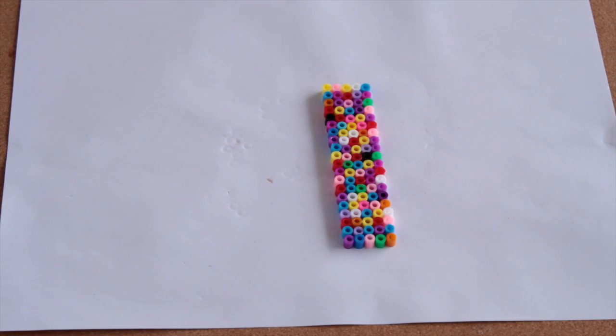You will need an ironing board or some sort of heat resistant board. To make the cuff bracelet, place a piece of paper or baking paper. Arrange the beads on the paper, 5 beads across and 20 beads down.